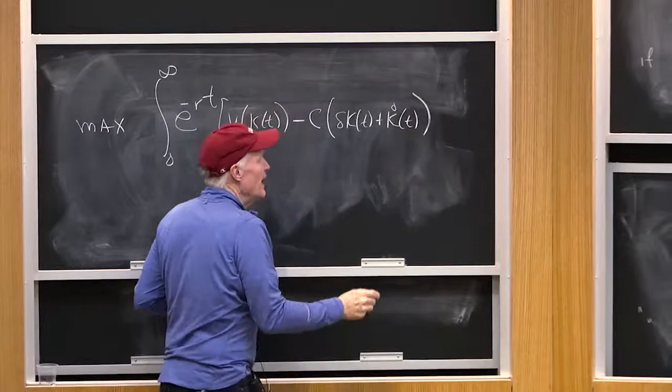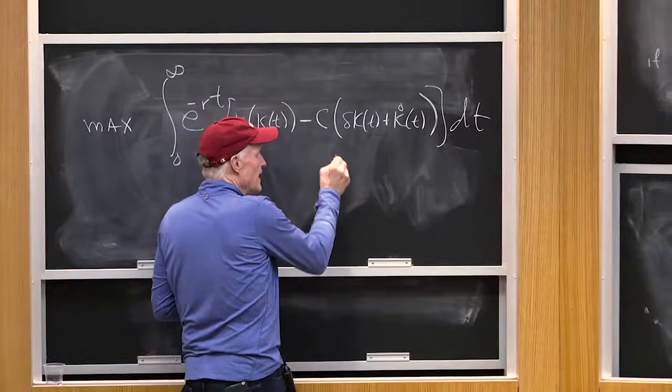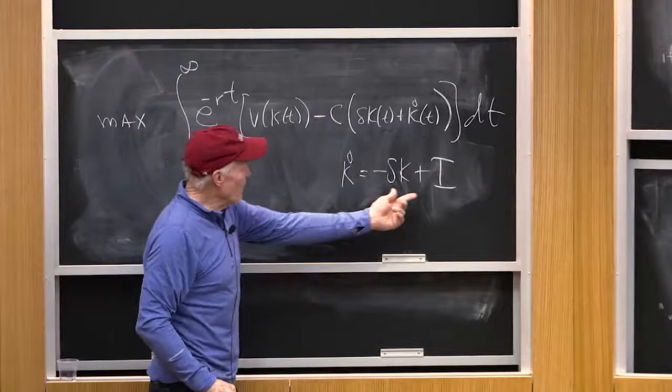Everybody agrees with that? That is, gross investment, which is i, is delta k plus k dot, okay? Because k dot, remember, k dot equals minus delta k plus i, right? So therefore, i is equal to delta k plus k dot.